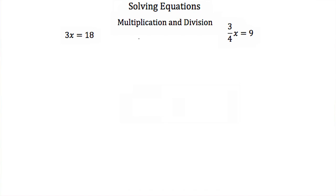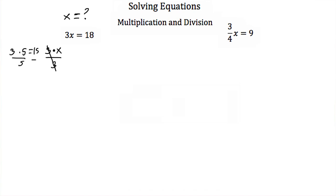The same thing works for multiplication and division. Here we have 3x, or 3 times x, is equal to 18. We're trying to get x alone on one side of the equal sign. So how do we get rid of x being multiplied by 3? We just do the opposite — we divide by 3. So 3 times x divided by 3 would just be x. For example, if I had 3 times 5 equal to 15, and then divided by 5, I would just go back to my original 3. So 3 times x divided by 3 is just x.